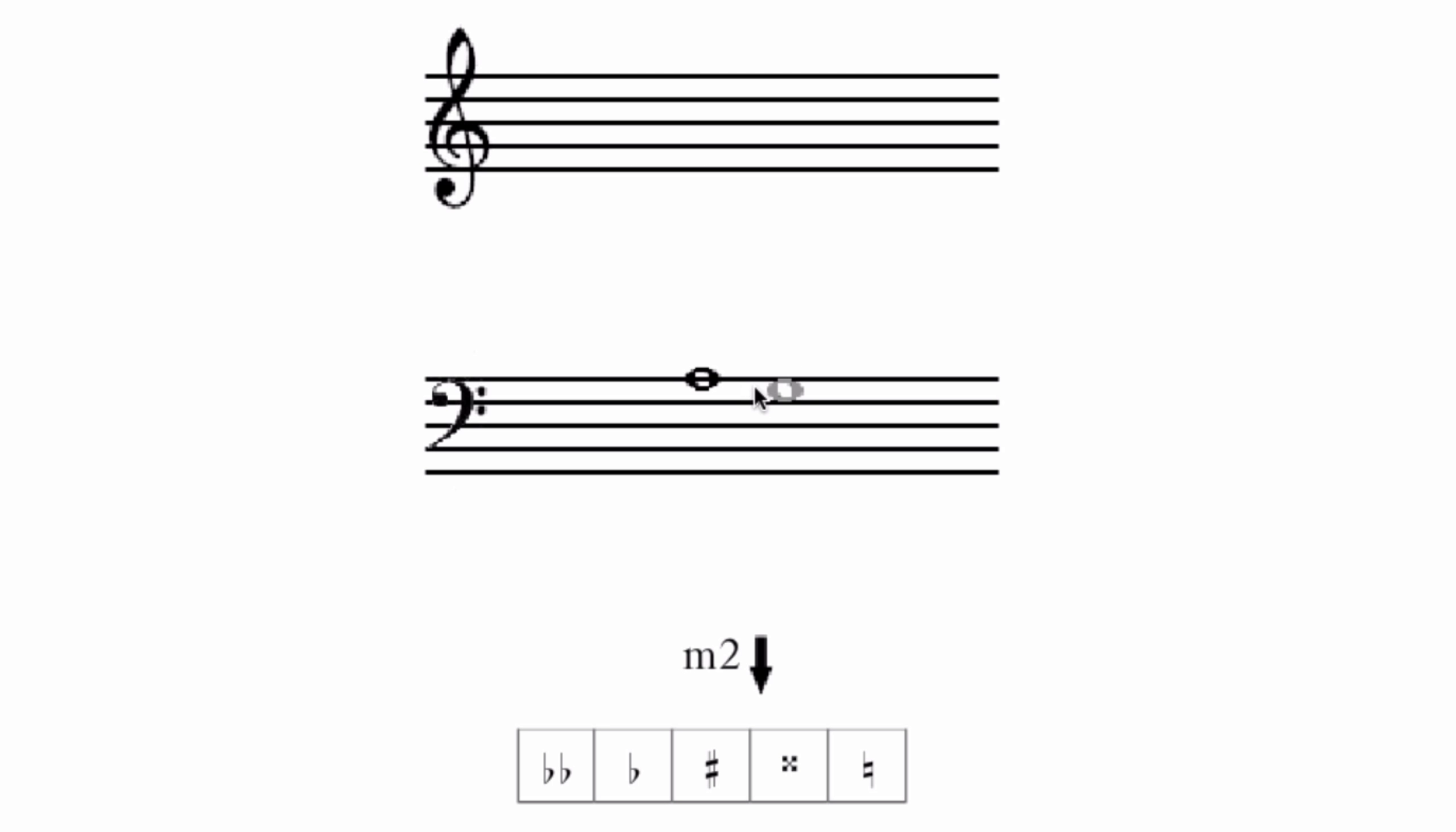This one, minor 2nd below. Well, A down to G is a whole step. I need it to be less than that, so I need to put a sharp on that G. G sharp to A is a minor 2nd. Next,